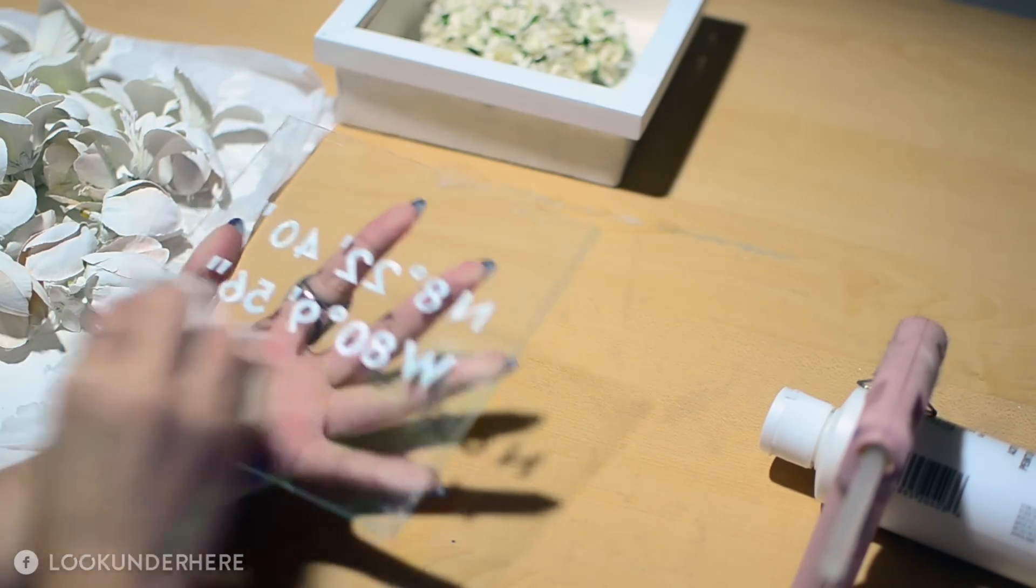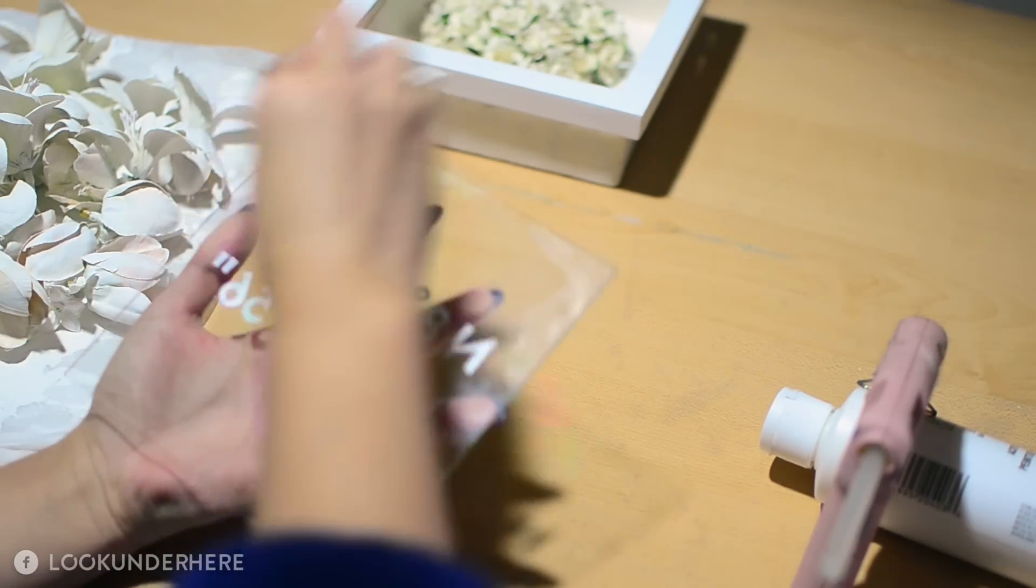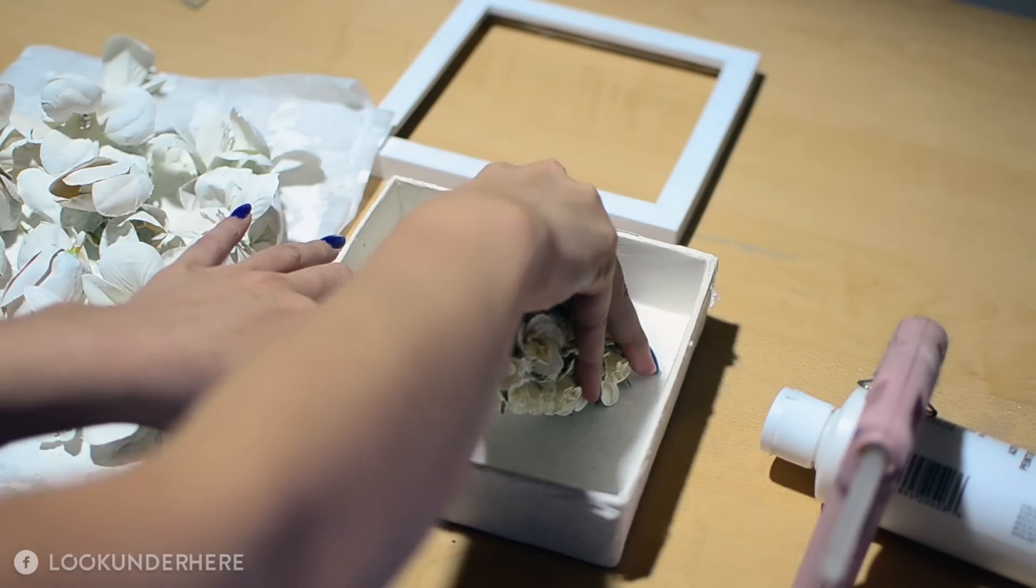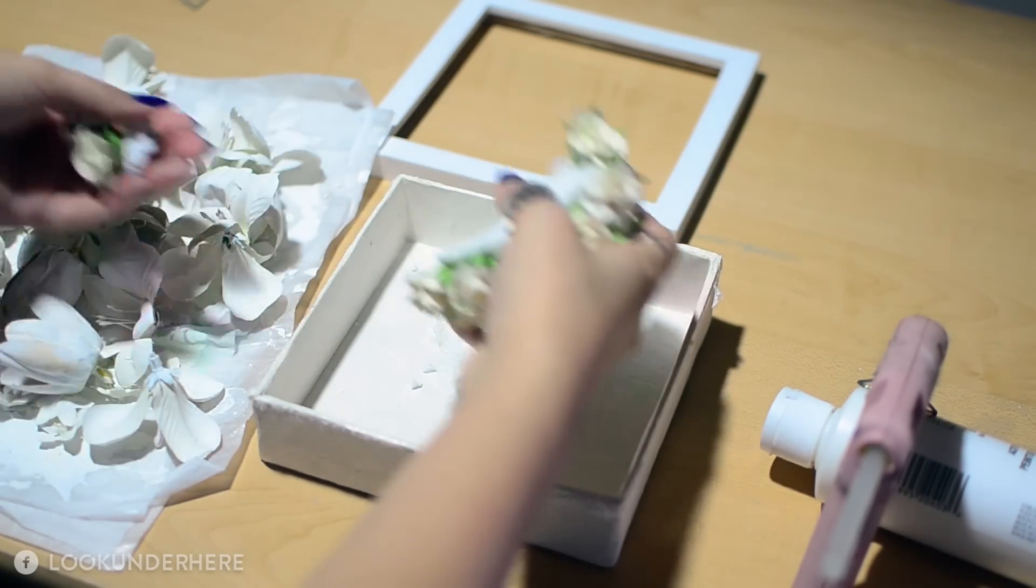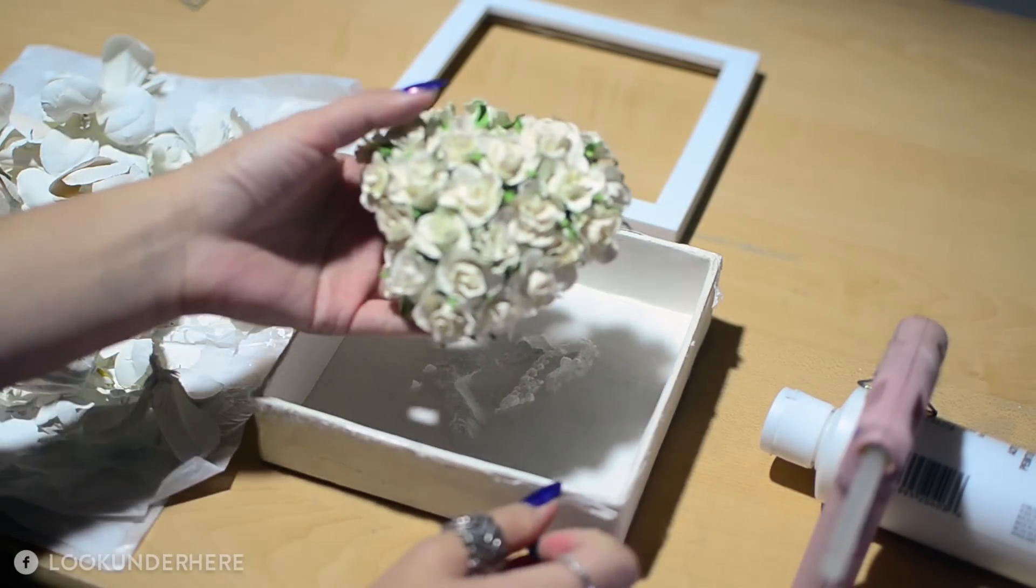After everything dries, clean the other side of the glass and set aside. I took the floral arrangement out of this frame and placed the dried painted flowers inside, leaving the little ones last to strategically arrange.